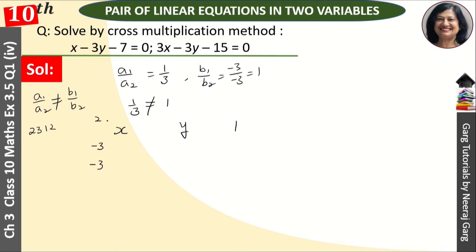So 2 goes below — the y coefficient. Then 3 means the constant term: minus 7 and minus 15. Then 1 means the x coefficient: we have 1 and 3. Then 2 — the y coefficient again — is minus 3 and minus 3.